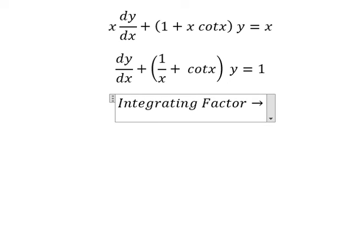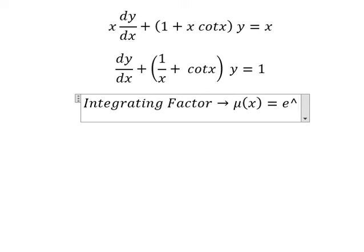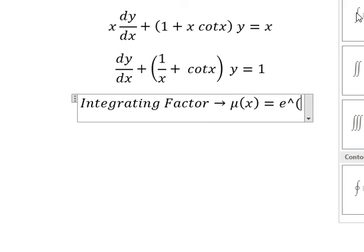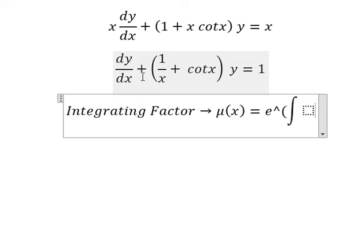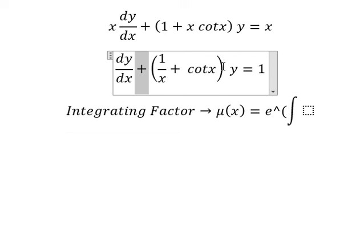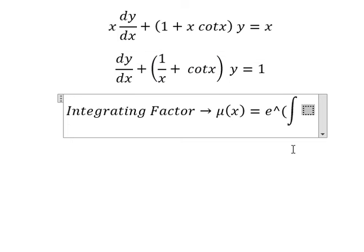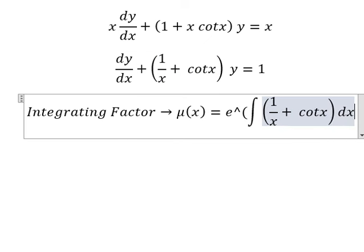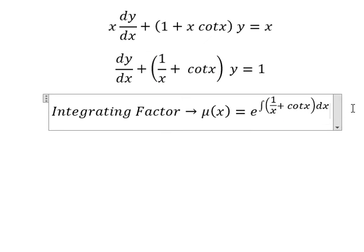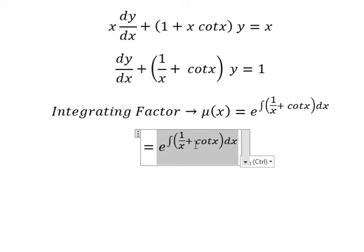So we need to find μ(x) equals to e to the power of the integration. We see that this one is positive next to y. This is for the integrating factor, so I will put this one here. This one is cotangent x, that is cosine x over sine x.